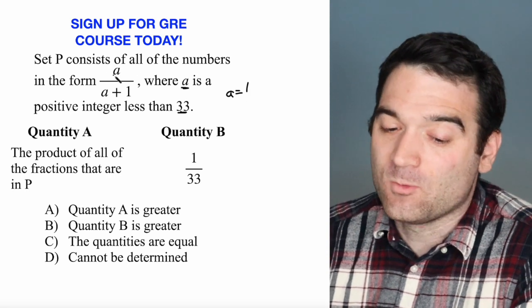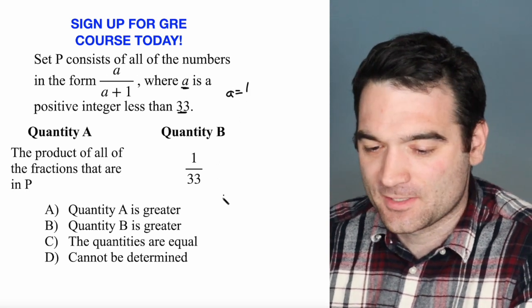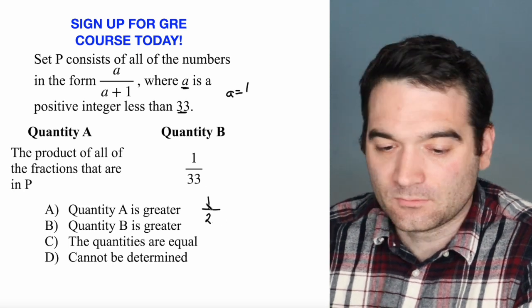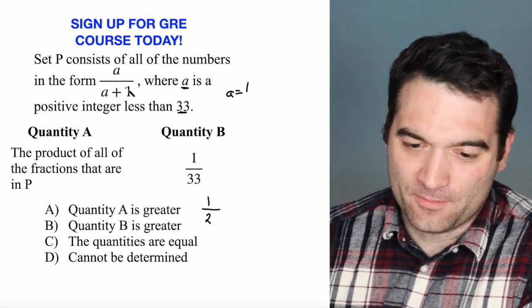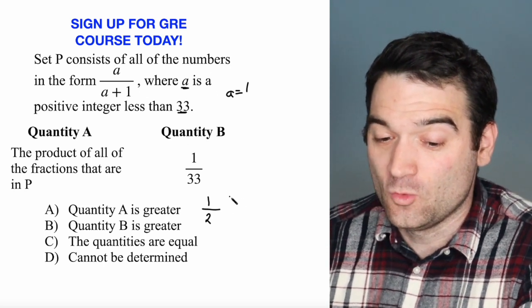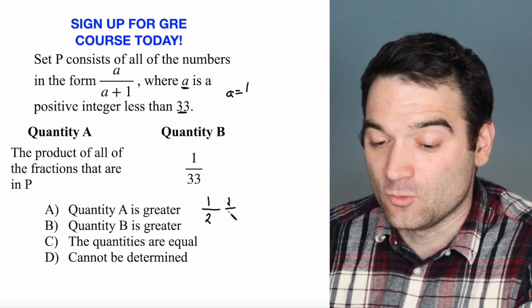What happens in that case? Well, if a equals 1, then we're talking about, where should I write this? Let's write it over here. 1 over 1 plus 1, which is 2. And the second term, or the second number of the sequence, is going to be 2 because we're talking about integers. So that's 2 over 2 plus 1, or 2 over 3.